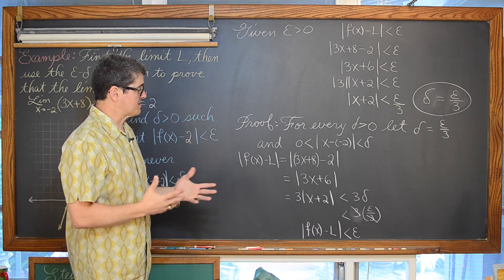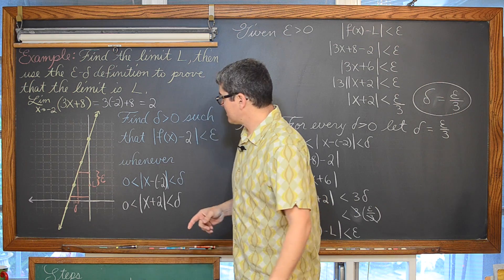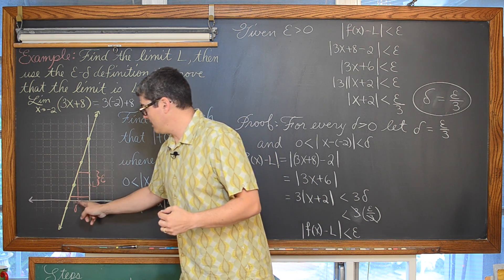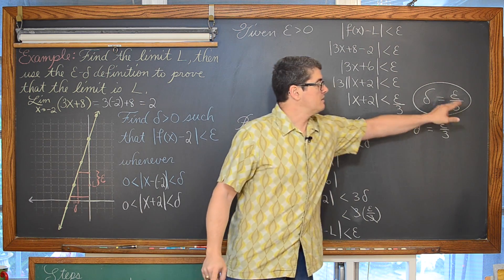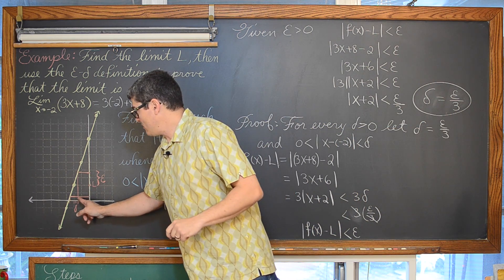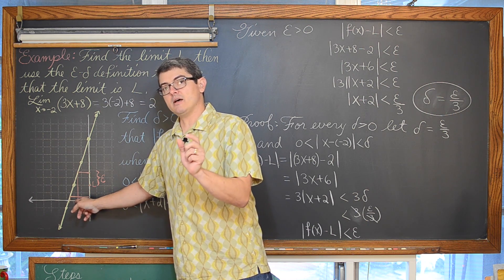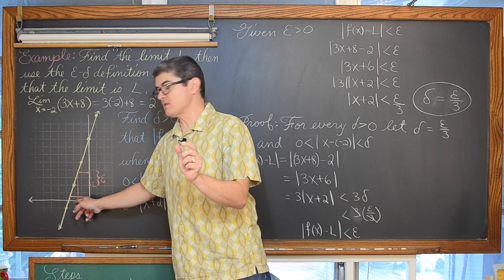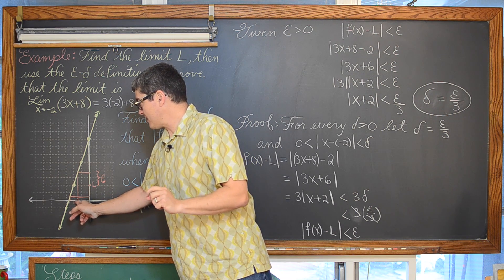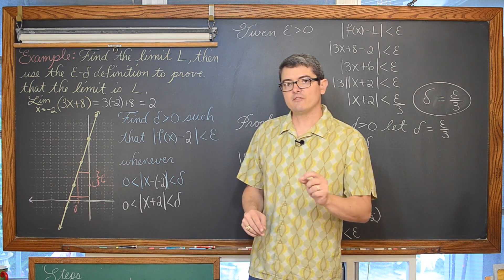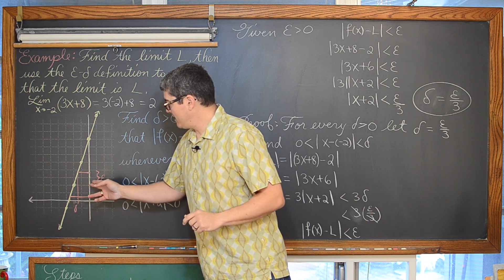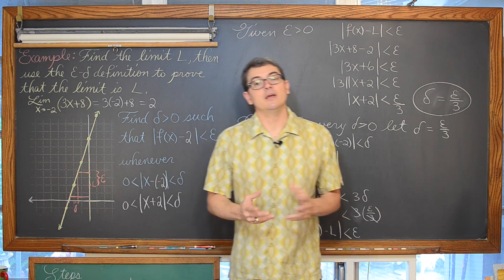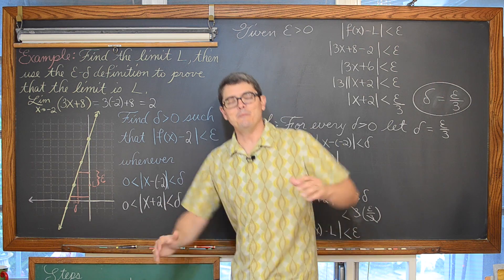We have proven that |f(x) - L| < epsilon when we have this direct relationship that delta equals one third epsilon. That direct relationship came from our initial scratch work, getting our f(x) minus L expression to match the x minus c expression. That is the end of our first proof — as long as you give me an arbitrarily small distance epsilon, I can give you a delta which is one third the value of epsilon, and I can produce a function value within epsilon of the limit.